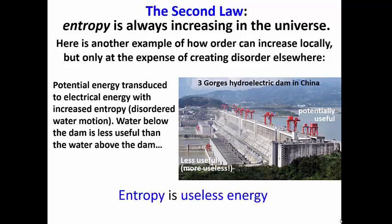Another way to look at this is to say that the water in the stream bed below the dam is more useless. Or by comparison to the potentially useful water in the lake, the water that has already flowed through the dam is now useless. So entropy then can be seen as useless energy. Energy that can't be used to do anything productive, unlike the water in the lake.